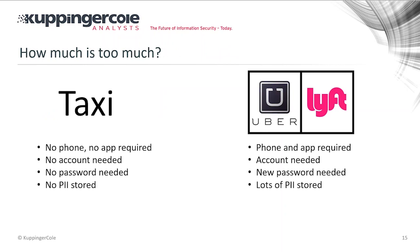If we use a taxi in a traditional way, we don't need a phone, an app, an account, no password, no registration — there's not even PII stored if I pay cash, so I'm totally anonymous. If I use Uber or Lyft, I need a phone, an app, an account, a registration process, and a lot of PII stored. A lot of people choose that because the benefit outweighs what they share — but the more they learn about what they're sharing, the different their decision might look.